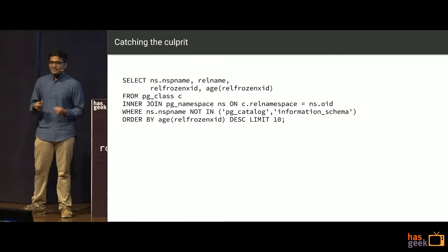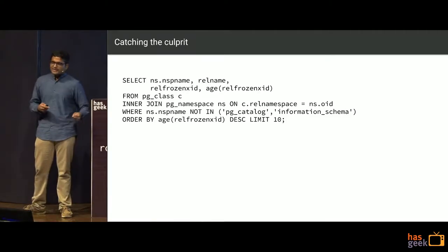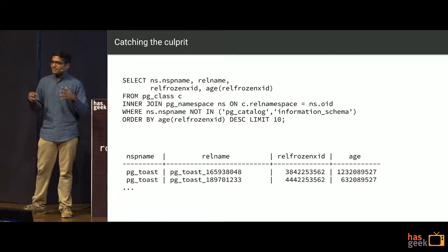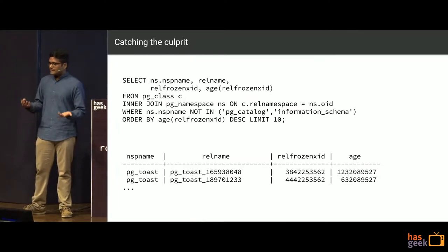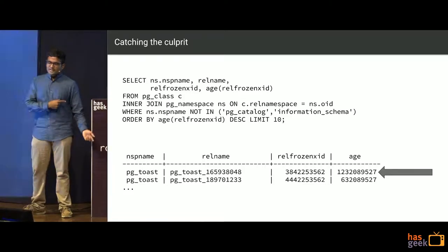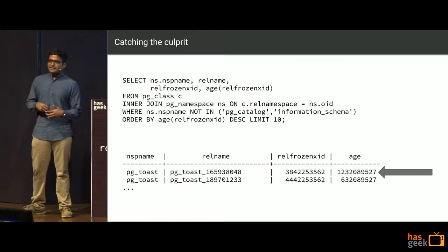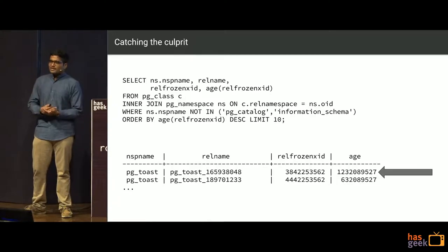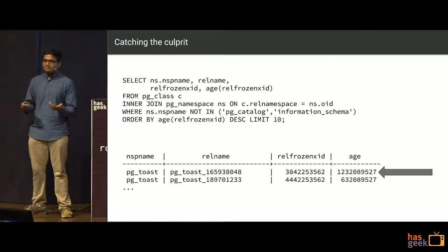Using a SQL query ordered by age, we were able to get a listing of relations. The idea was to not be afraid of digging in deep even with limited time — just stay calm, use the documentation, and build it all up. We found a row showing 1.2 billion, and identified the specific relation that was causing the database to freak out and think the transaction ID wraparound was going to happen.